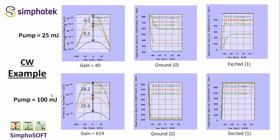Comparing to a pump of 100 millijoules, the total gain has increased from 40 up to 619. The gain is about 25.6 in the first half and a similar 24.2 in the last half of the sample. Looking at the ground and excited state populations, all through the sample at positions 0.5 and 1, the ground state is nearly depleted and excited state 1 is nearly populated, resulting in high gain throughout the sample.